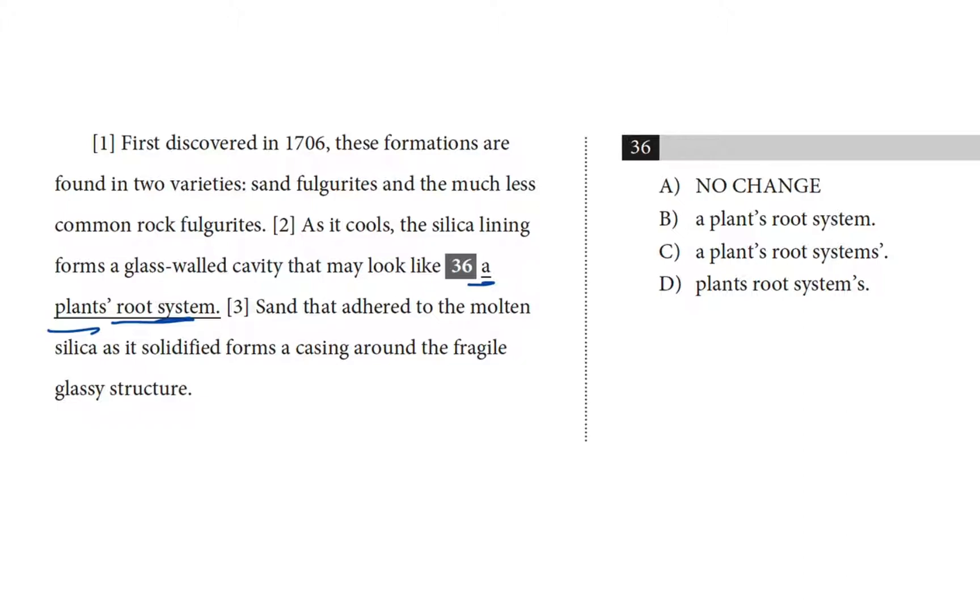And I said a plant. The 'a' in 'a plant' tells us it's singular. So we need a singular possessive. That's plant apostrophe S. So that means we've got S apostrophe in choice A, cross that out, and no apostrophe, just plants in choice D. So we can cross both of those out.